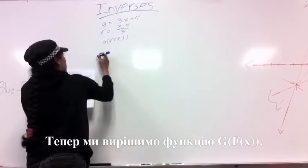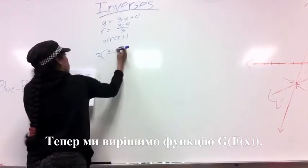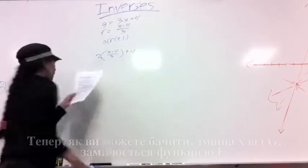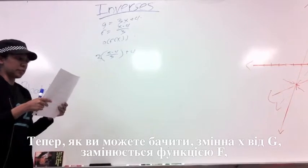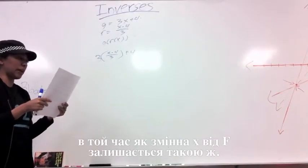When you write this out, you will have 3, and then in parentheses, x minus 4 over 3 plus 4. Now, as you can see, the x variable in g is replaced with the function of f, while the x variable in f remains the same.